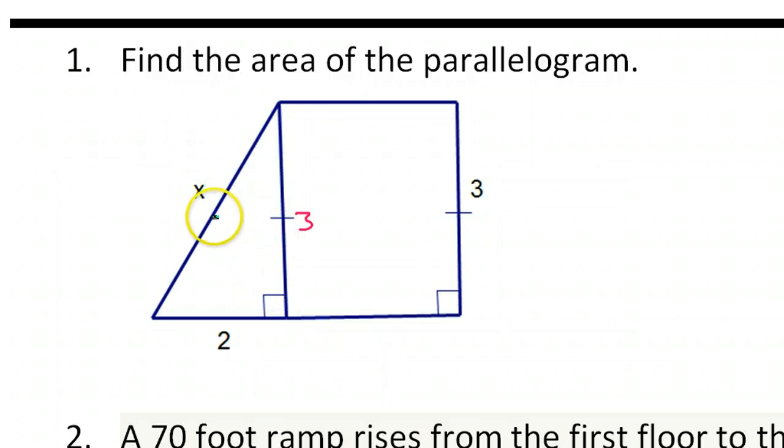If we want to find x, maybe I'll just cross this out and put find x. Pythagorean theorem, once you realize that this is 3, then it's all about the Pythagorean theorem. So a squared plus b squared equals c squared. So 2 squared plus 3 squared equals x squared.